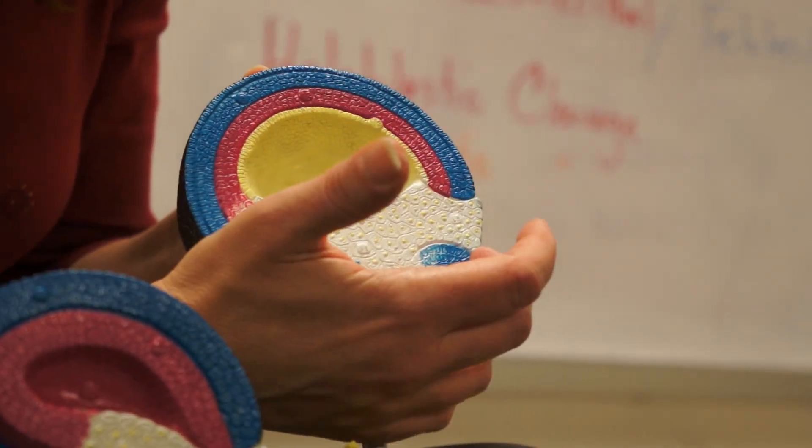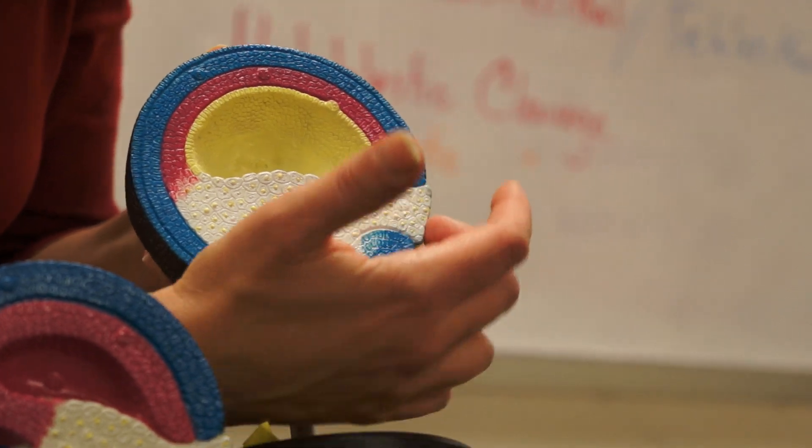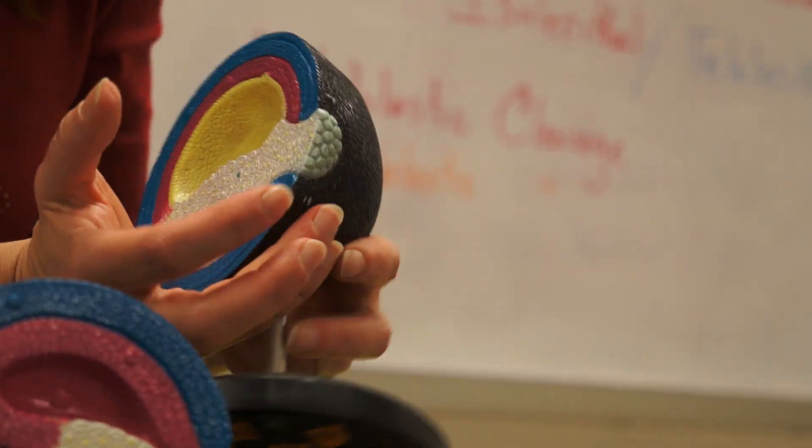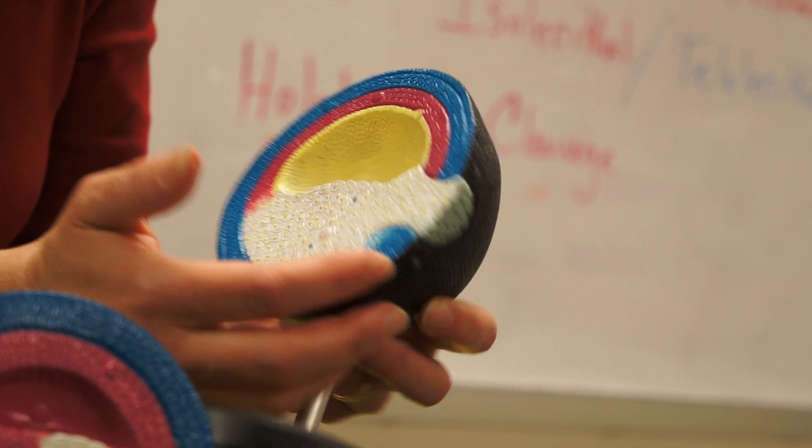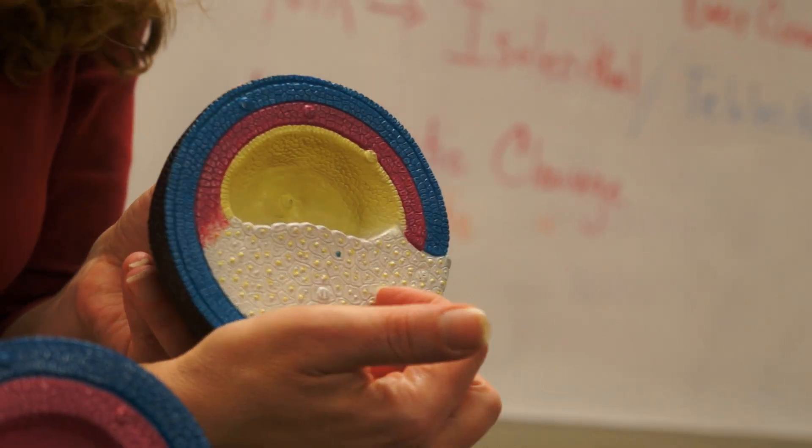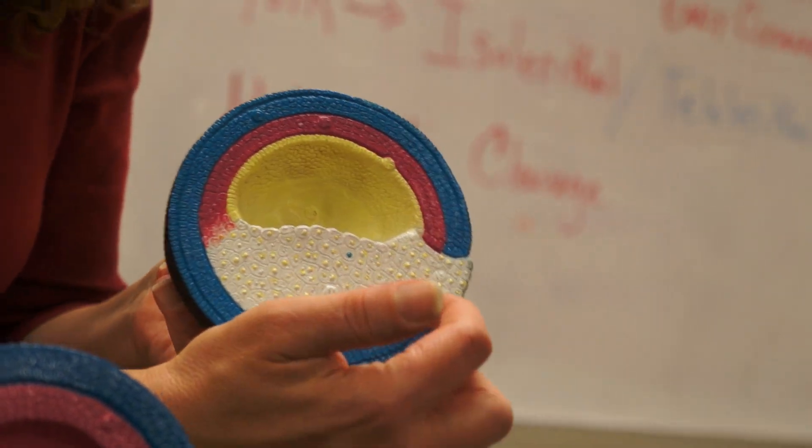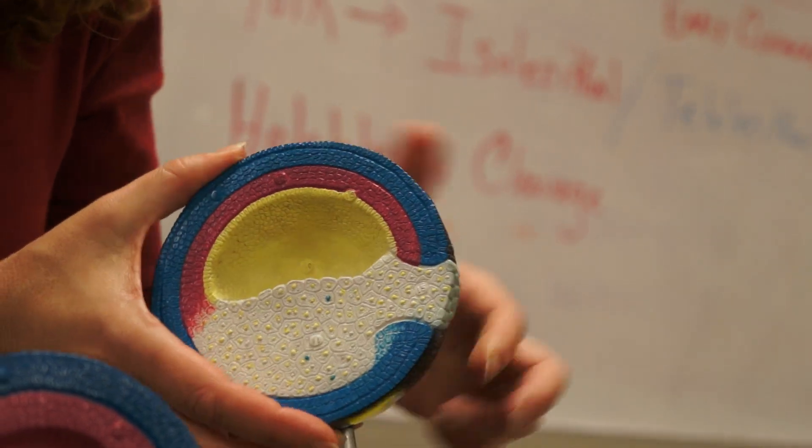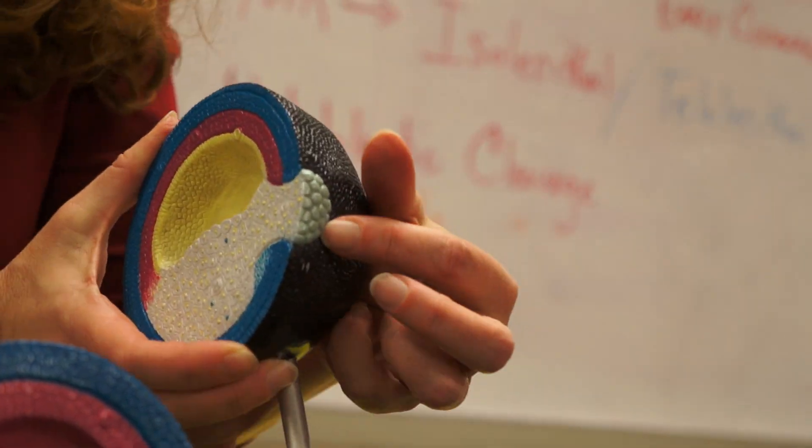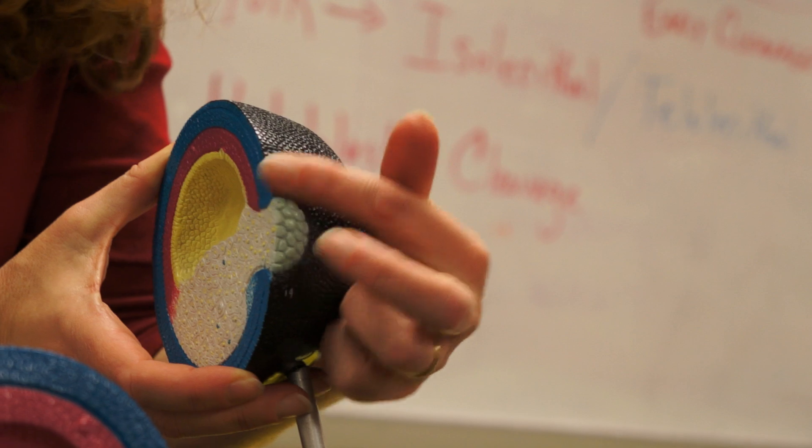This side here where those cells are on the other side of what's left of the vegetal pole, that is the yolk plug. This side here where the cells are involuting also is the ventral lip. This opening that the yolk plug is filling is called the blastopore.